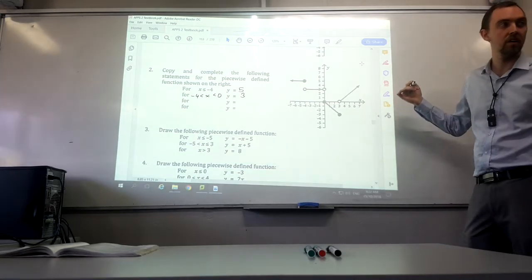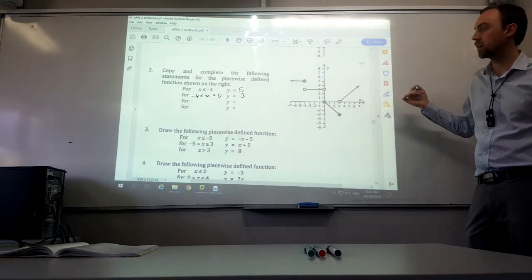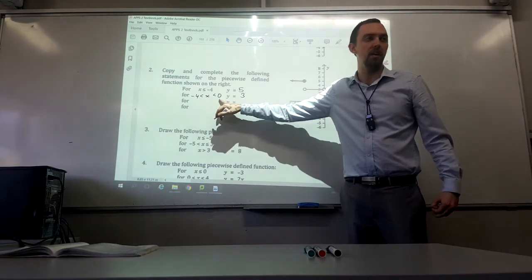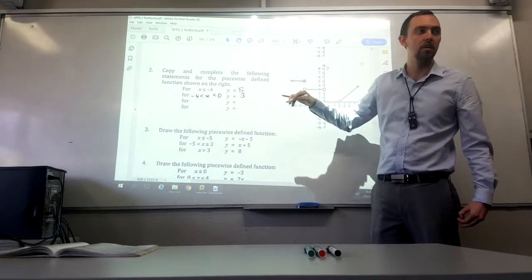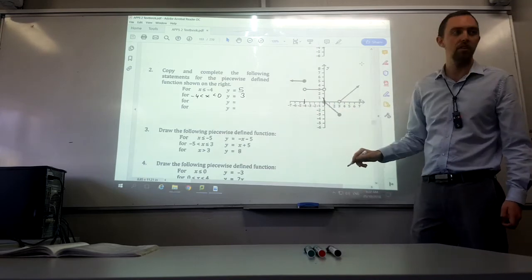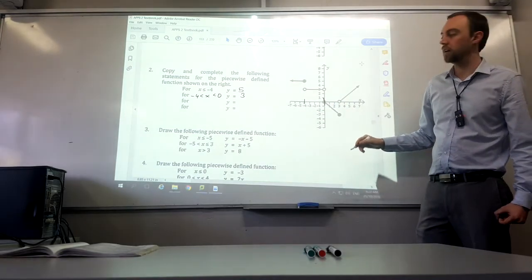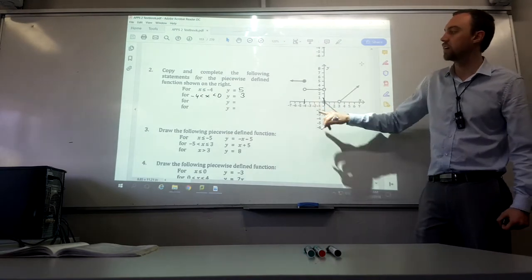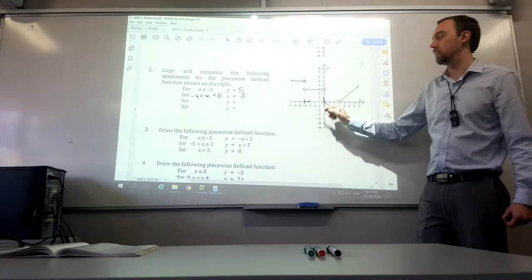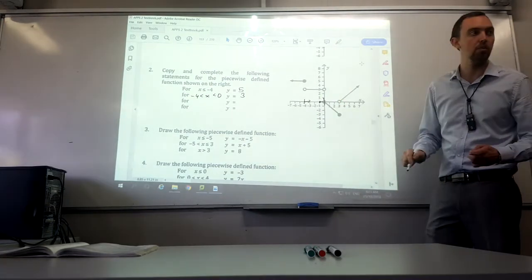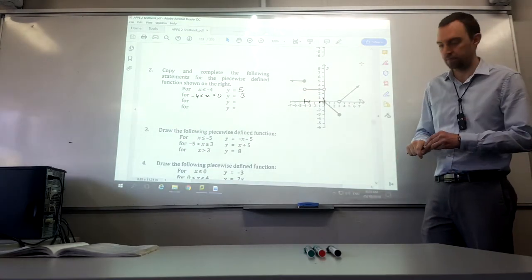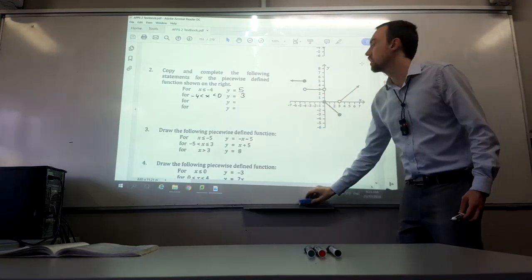So we've got open dots. So are we using equal to or are we using the not equal to? Not equal to. So we've got negative 4 and 0, not equal to and x in between. And what's our function? What's y equal to? 3. Horizontal line, so it's really easy to do.